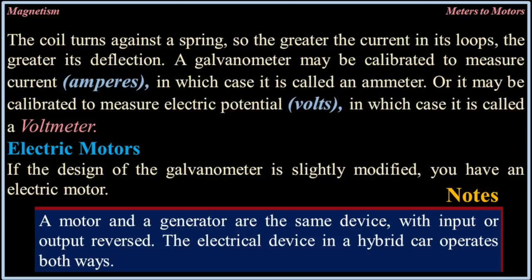A galvanometer may be calibrated to measure current in amps, in which case it is called an ammeter. Or it may be calibrated to measure electric potential in volts, in which case it is called a voltmeter.